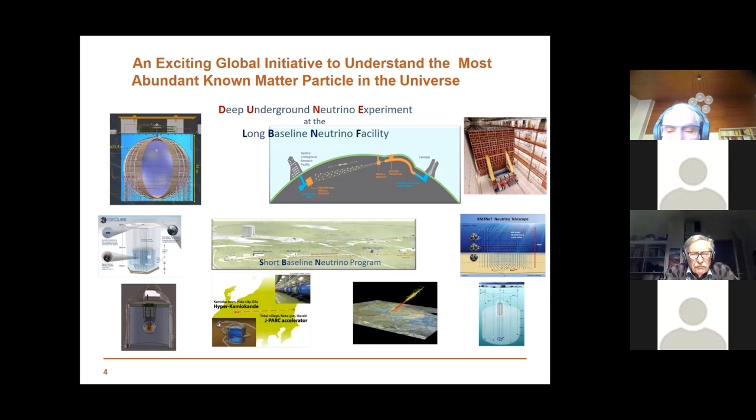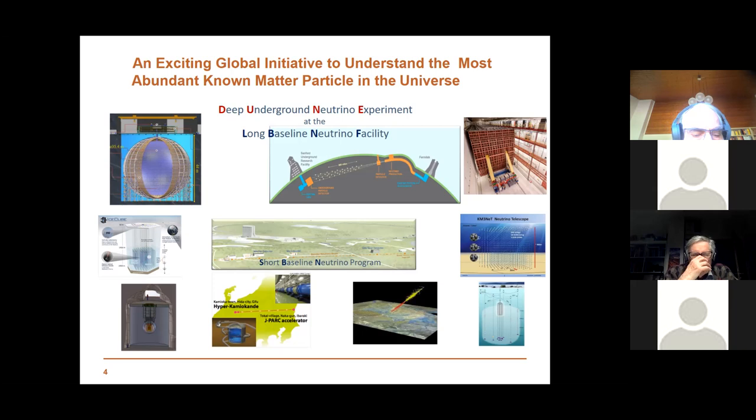There are big experiments going on like T2K — a big and successful experiment — or NOvA. There are experiments which are almost there, like JUNO, and there are experiments which are a bit more distant but not so far away, like Hyper-K and DUNE.